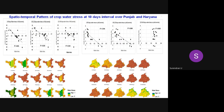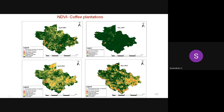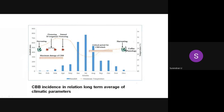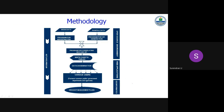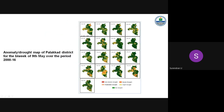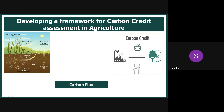We also conducted a water stress study for Punjab and Haryana — understanding where stress occurs and how to manage it. Based on a request from the Department of Agriculture, Kerala, we did crop growth assessment studies using software. For coffee, comparing a wet year (2007) with a drought year using NDVI, severely affected areas were clearly visible, which was confirmed by coffee board yield data. Based on this, we developed a drought assessment decision support system for the Wayanad region, currently running on our website.